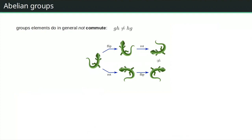An important property is commutativity. Group elements do not generally commute: for matrix groups, gh ≠ hg in general. Another example is the group O(2) of reflections and rotations: reflecting this lizard and then rotating gives something different from rotating first and then reflecting. So groups are in general not commutative.